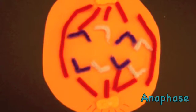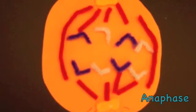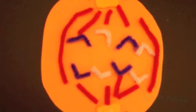In anaphase, the sister chromatids split from each other and each chromatid becomes a full chromosome. Each daughter chromosome moves to the opposite pole of the cell and the non-kinetochore microtubules lengthen, causing the cell to elongate.